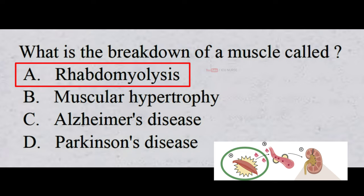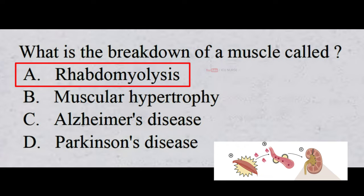Rhabdomyolysis is a condition in which damaged skeletal muscle breaks down rapidly. It is potentially life-threatening and results from breakdown of skeletal muscle fibers with leakage of muscle contents into the circulation.